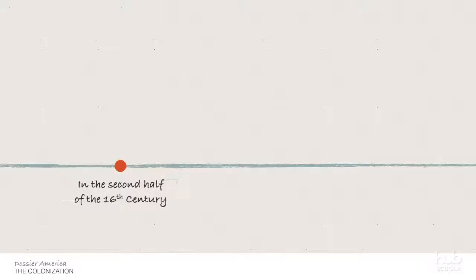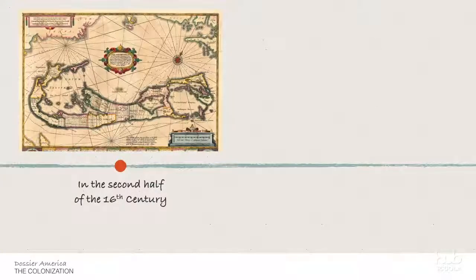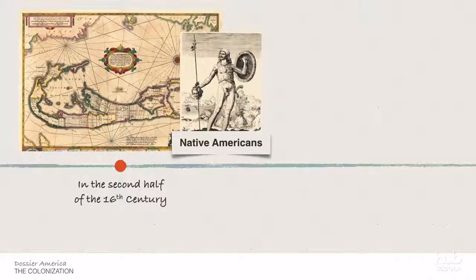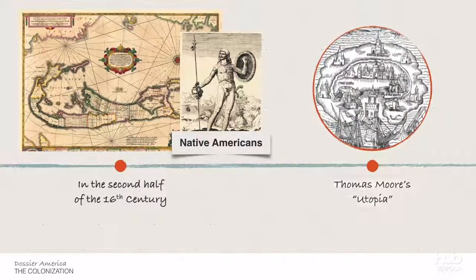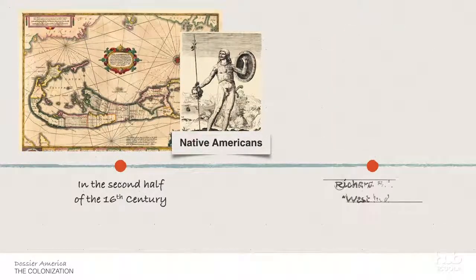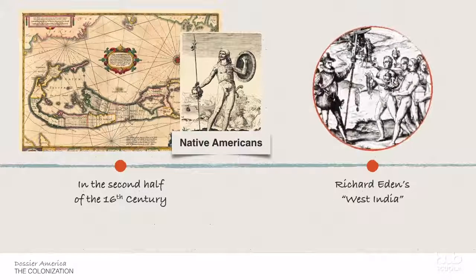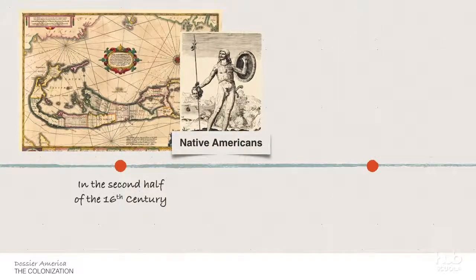In the second half of the 16th century, there was an obsession amongst writers with the discovery of America. Native Americans were often referred to in terms of nightmare or myth and were often depicted as cannibalistic. Some key works of this period include Thomas More's Utopia, Richard Eden's West India, and Shakespeare's The Tempest.